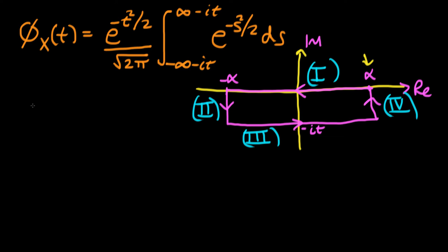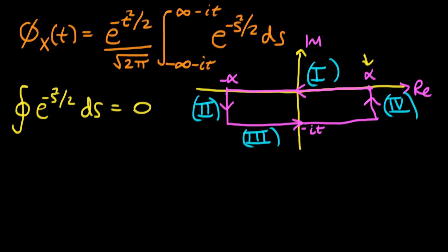Let's think about what the evaluation of e^(−s²/2) integrated around this closed contour is going to be. As I mentioned at the end of the last video, the closed contour integral of e^(−s²/2) is actually going to be equal to zero, because the function e^(−s²/2) is analytic for all points around which we're integrating.